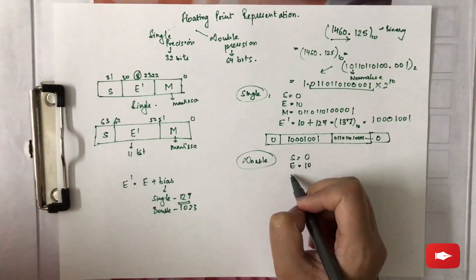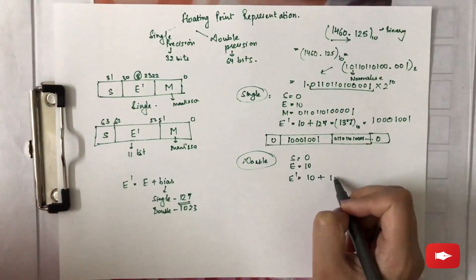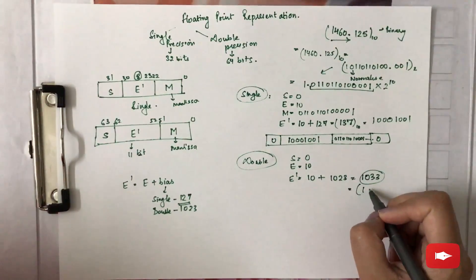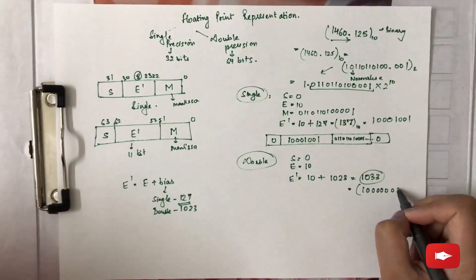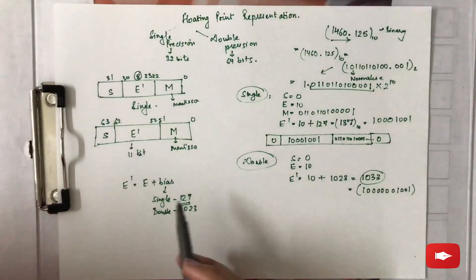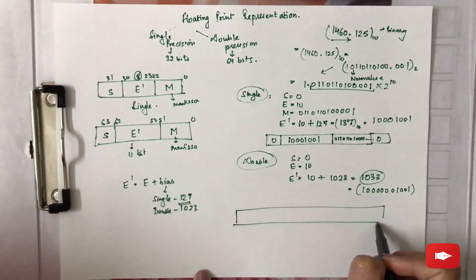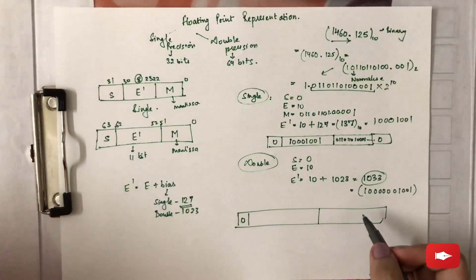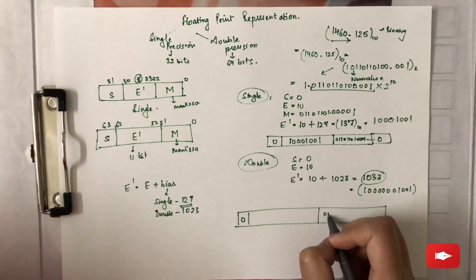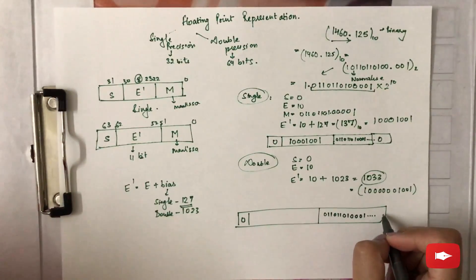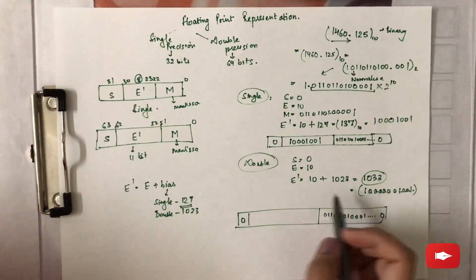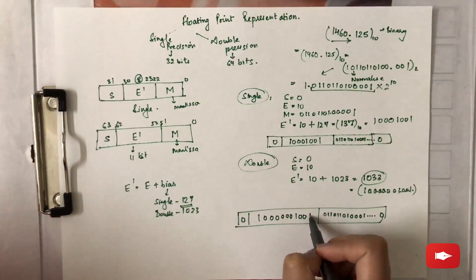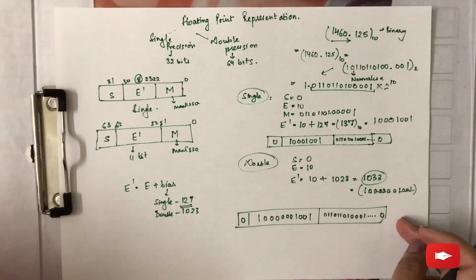For double precision, S is the same — 0. The exponent e is still 10, but e-dash here will be 10 + 1023 = 1033. Converting 1033 into binary gives 10000001001. Representing this in the 64-bit format: S is 0, the 11-bit exponent field is 10000001001, and the 52-bit mantissa field holds the same mantissa bits padded with zeros. This is the double precision format for the same number.